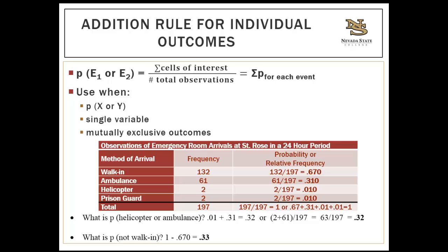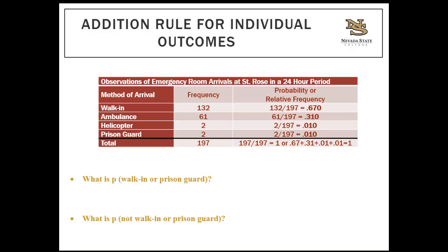If you were simply interested in this 24-hour period and did not have the goal of predicting future events, you could say the proportion of arrivals by helicopter or ambulance was 0.32, or 32% of arrivals were via helicopter or ambulance on this specific day. Now try this problem: what is the probability that the next patient will be a walk-in or brought in by a prison guard? And what is the probability they will not be a walk-in or brought in by a prison guard?